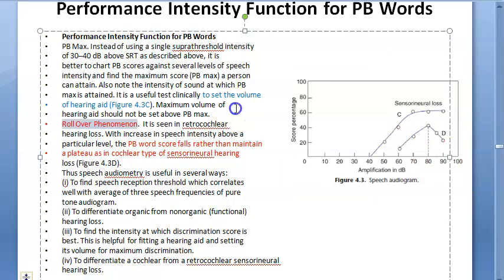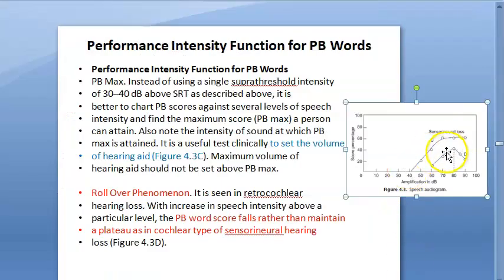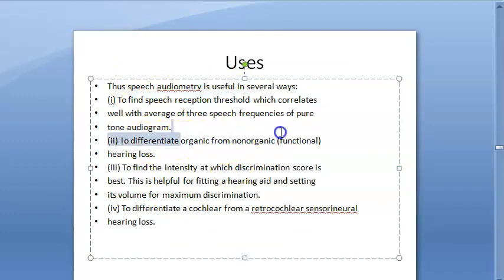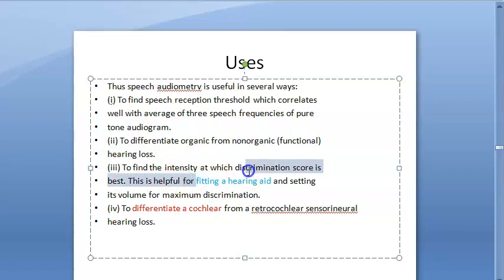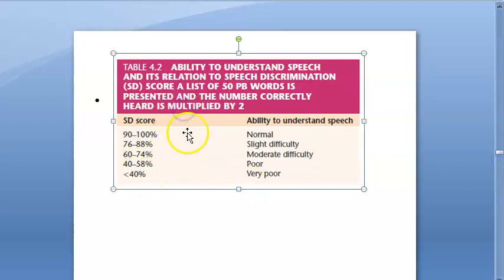This is called the rollover phenomenon. Speech audiometry is useful for: finding the speech reception threshold, differentiating organic from non-organic functional (psychological) hearing loss, fitting hearing aids, and differentiating cochlear from retrocochlear hearing loss — based on the ability to understand speech and its relation to speech discrimination score.